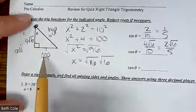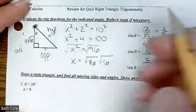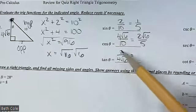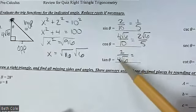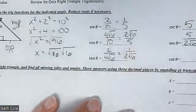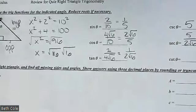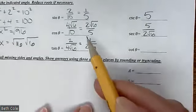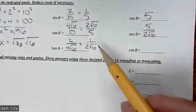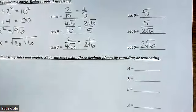And then tangent is opposite over adjacent. So it is two over four square root of six. And you need to reduce the two fourths. So that would be one half. And then for cotangent, you flip that over. So same thing I said about cosecant. You can write two square root of six over one if you want to, or just two square root of six.